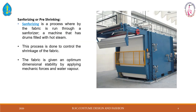Next is sanforizing. This machine is used for woven fabric. In the sanforizing process, the fabric is passed through the sanforizing machine. The sanforizer is a machine with drums filled with hot steam. This process is done to control the shrinkage of the fabric. Sanforizing is also known as pre-shrinking — that is, the fabric's length, width, and dimensions change because the fabric is stressed during washing and will automatically shrink.